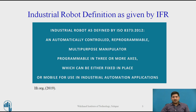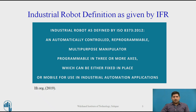Different textbooks have different definitions of industrial robot, though they do converge in a general direction with slightly different definitions, which is nothing surprising. But the best way is to follow the definition as given by ISO, which has been quoted even by the International Federation of Robotics on their website. An industrial robot as defined by ISO is: an automatically controlled, reprogrammable, multipurpose manipulator, programmable in 3 or more axes, which can be either fixed in place or mobile, and used for industrial automation applications.